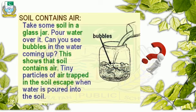Soil contains air — now let's prove this with an experiment. Take a jar, cup, or bottle, put some soil inside it, and start to pour some water. You can see bubbles coming out in the water. This shows that soil contains air, because the tiny particles of air trapped in the soil start to escape when we pour water, which is why the water creates bubbles.